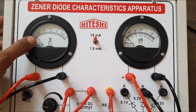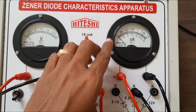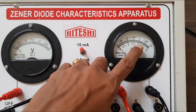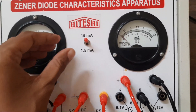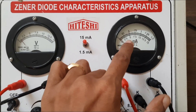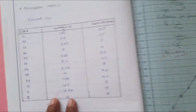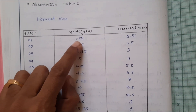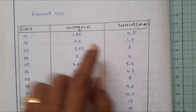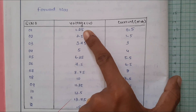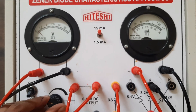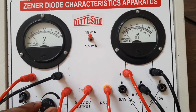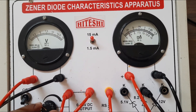Gradually increase the voltage and note down the corresponding current on the milliammeter. One division on the voltmeter equals 0.25 V. On the milliammeter (range 0 to 15 mA), one division equals 0.25 mA — so two divisions is 0.5 mA. For example, at around 1.25 V the current reads approximately 0.5 mA. As you increase the voltage, you can see the current also increases.